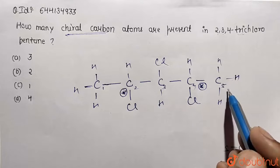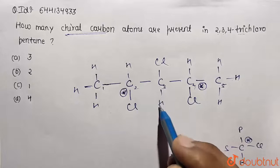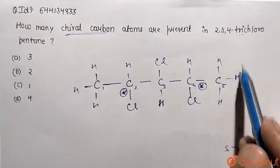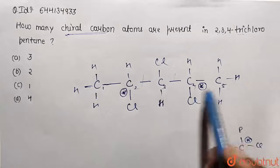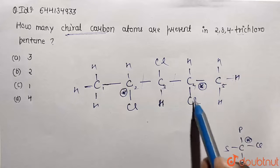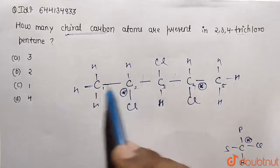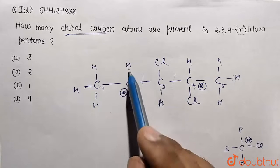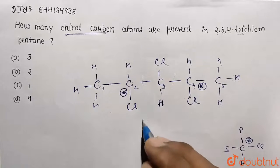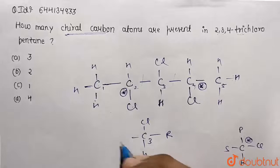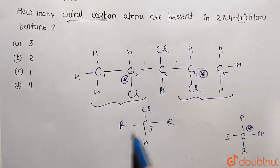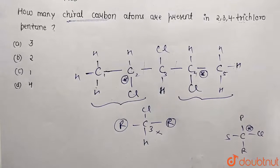Now checking carbon 3: it has hydrogen on one side and chlorine on another. But when we compare the two remaining groups on either side, both groups turn out to be the same — each has 2 carbons, 1 chlorine, and 4 hydrogens. So both alkyl groups attached to carbon 3 are identical, meaning carbon 3 is not a chiral center.